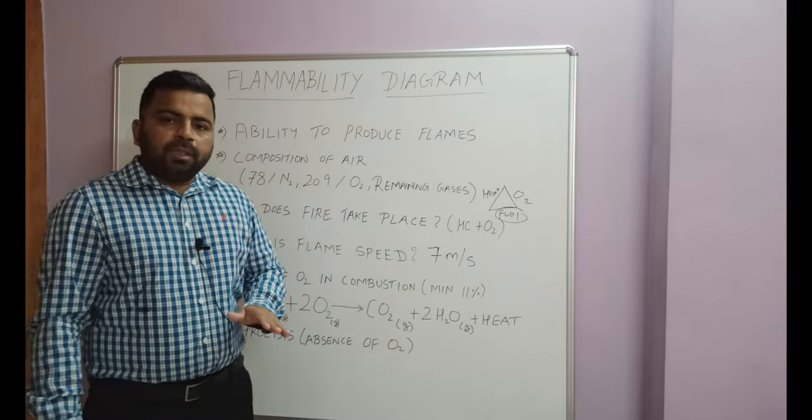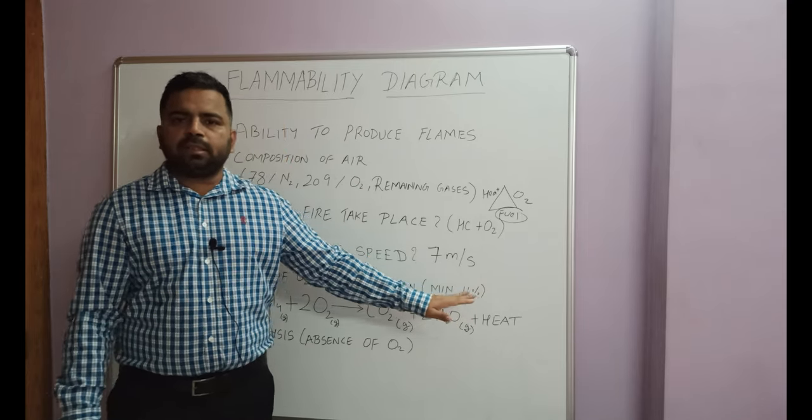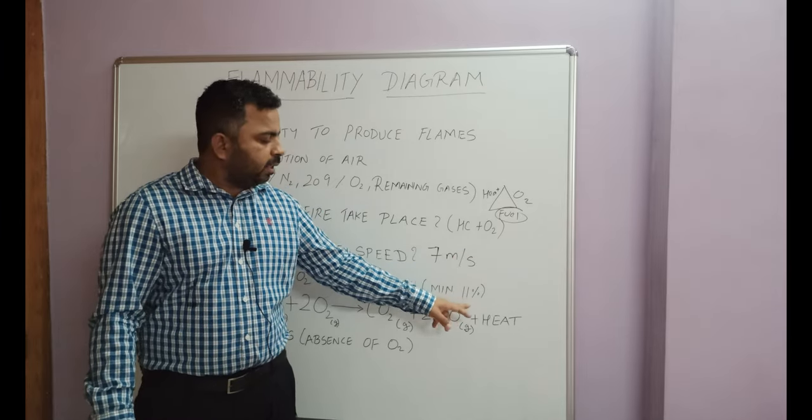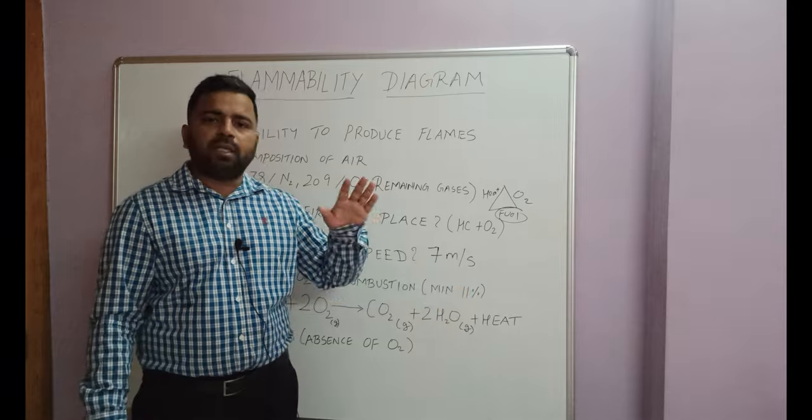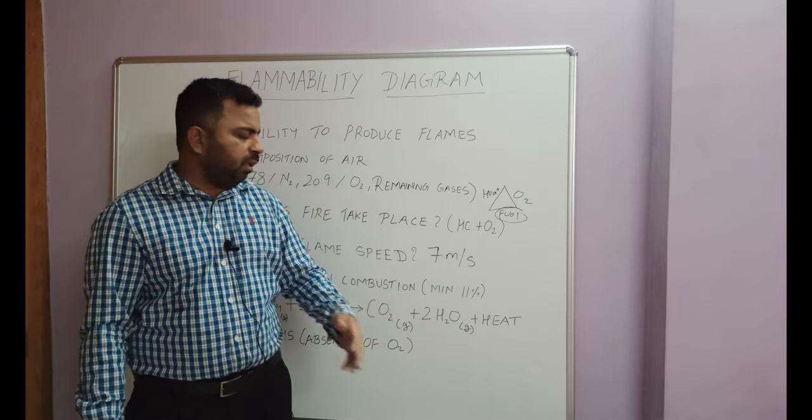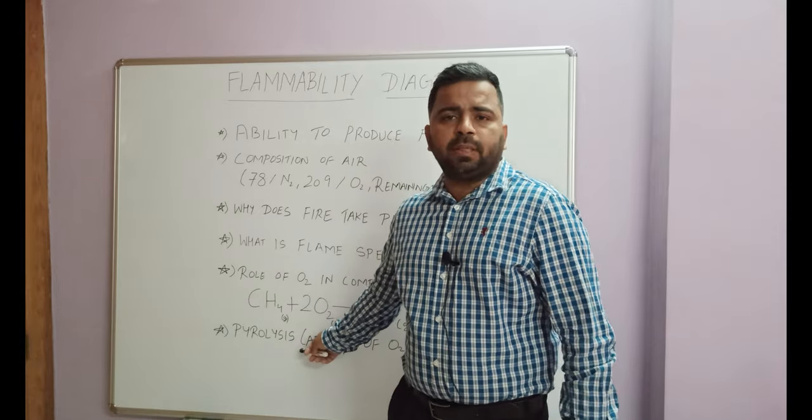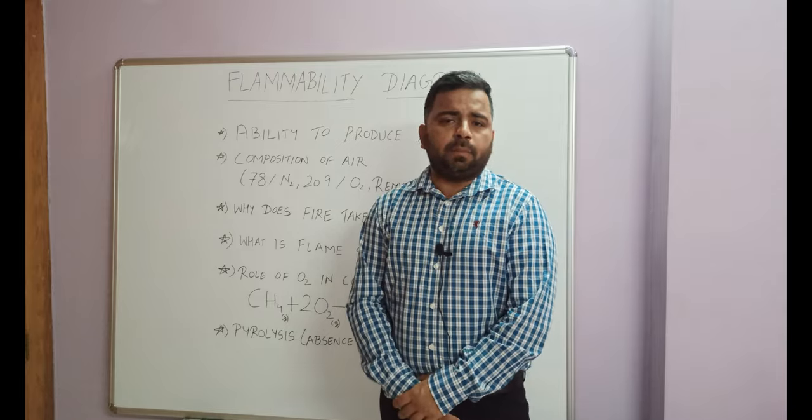For any combustion to take place, minimum oxygen has to be 11%. In some places this figure is written as 11.5%, in some 12%, some 11%. We will consider the lowest possible figure, which is 11%. We will not go deep into pyrolysis today, but if you want me to cover it, we will in some other class.